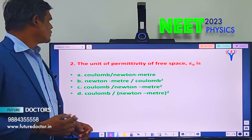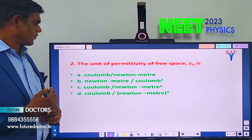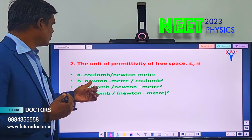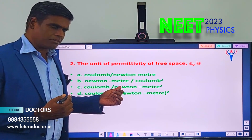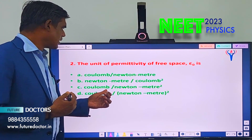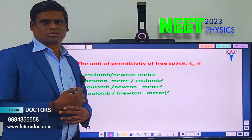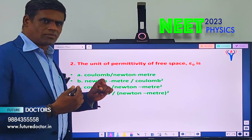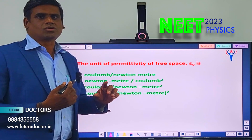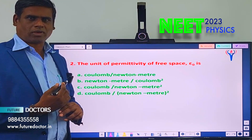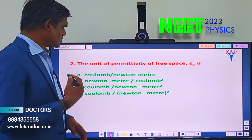Let us move to question number 2. Unit of permittivity of free space ε₀ is: A) Coulomb per Newton·meter, B) Newton·meter per Coulomb², C) Coulomb per Newton·meter², D) Coulomb per Newton·meter². You should know the value for permittivity of free space ε₀ and also the formula. By knowing this, you can find the solution.